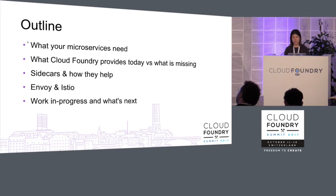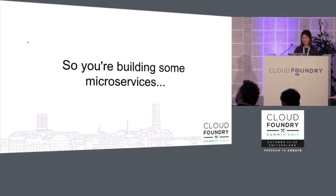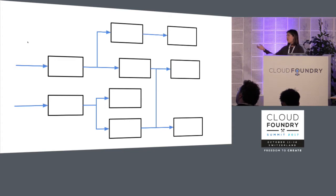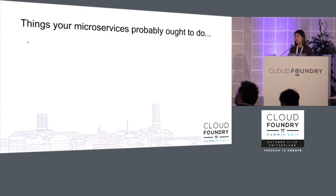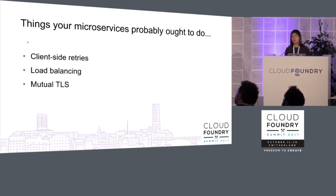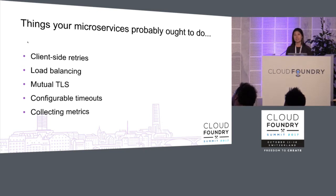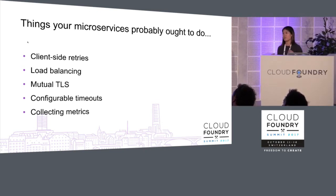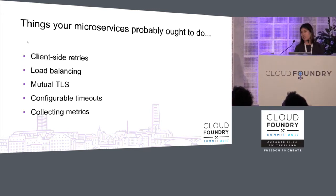You're building microservices — good for you. You've broken up a giant monolith and now have all these separate processes running small tasks, but now you have new operational complexity: how do all of these microservices actually talk to one another? You probably want them to support retries, load balancing, mutual TLS, security, configurable timeouts, and metrics collection — making sure your microservices are behaving correctly and engaging with one another.